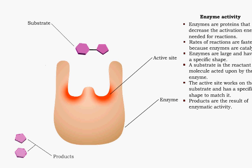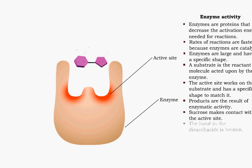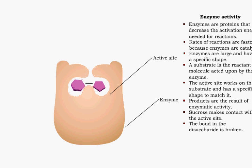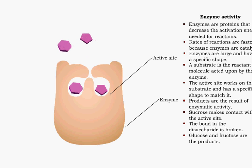In this example, the substrate is the disaccharide sucrose. The enzymatic activity breaks the bonds in the sucrose, and the monosaccharides glucose and fructose are the products.